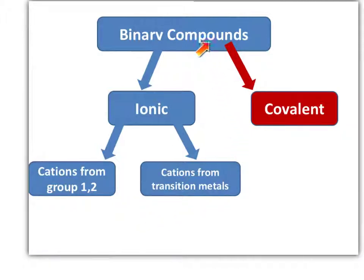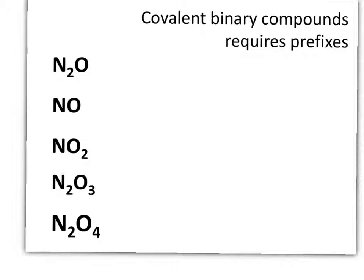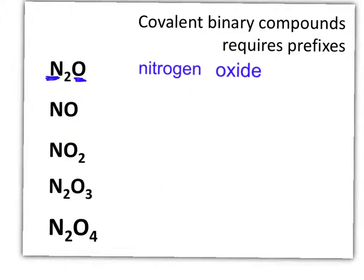Now, what if we have a binary compound and it's covalent? It doesn't start with a metal. Naming these kinds of binary compounds requires prefixes. In this first compound, we're looking at a compound with nitrogen and oxygen. We're simply going to name the first element in the compound, and then for the second element, change the ending to -ide. We have nitrogen oxide — but all of these compounds are nitrogen oxide. How do we tell them apart? The name has to be different for each one.